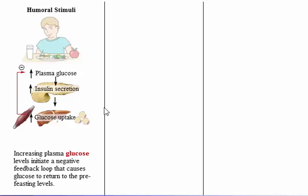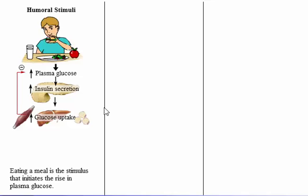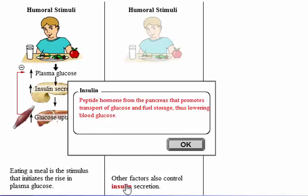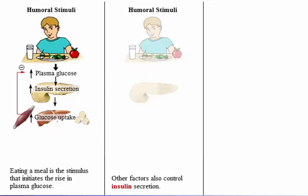The secretion of most hormones is controlled by negative feedback loops. They serve to keep hormone levels within a desired range. Eating a meal is the stimulus that initiates the rise in plasma glucose. Although blood glucose is the primary factor controlling insulin secretion, other factors also play a role.